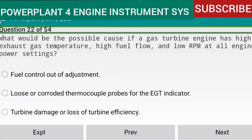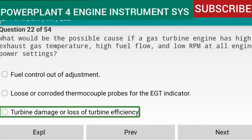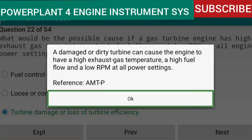Question 22 of 54: If a gas turbine engine has high exhaust gas temperature, high fuel flow, and low RPM at all engine power settings, the probable cause is turbine damage or loss of turbine efficiency. A damaged or dirty turbine can cause high EGT, high fuel flow, and low RPM at all power settings. Reference: AMTP.